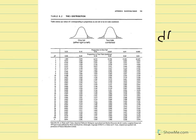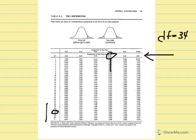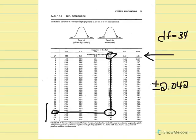In our t distribution, degrees of freedom equal 34. Since 34 isn't listed in the table, we go with the lower value — 30 — because lower degrees of freedom produce higher critical t values, making our test more conservative. Using the two-tailed test at 5%, we find where those values intersect and get critical t equal to plus or minus 2.042.